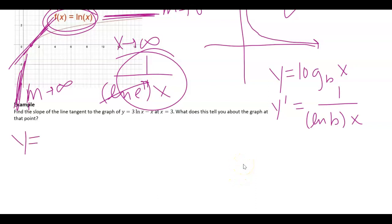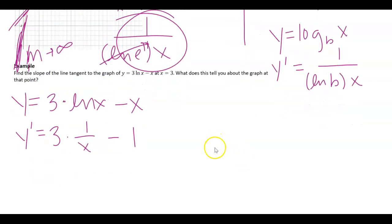I want to make sure we see in this that I have 3 times the natural log of x minus x. And so I need to figure out the derivative. So that's 3 times the derivative of natural log is 1 over x minus the derivative of x is 1.